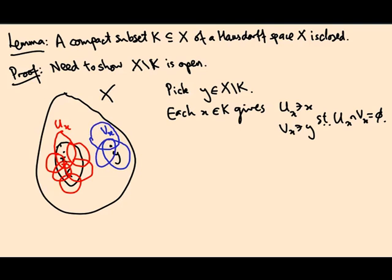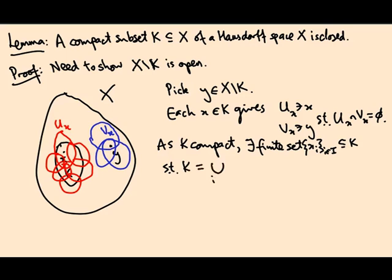And what we have to do then is say, okay, as k is compact, we can cover k with finitely many of these u_x's. So there exists a finite set of x_i's in k such that k is the union of the corresponding u_x_i's. Just like in this picture, it's just a finite number of red sets and a finite number of corresponding blue sets.